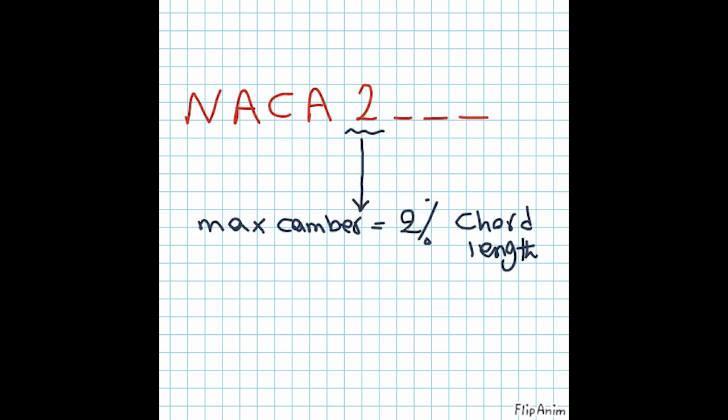First, let's talk about NACA with four digits following it. The first digit is really important—it tells us the maximum camber or the curvature of the airfoil. For example, a 2 means the airfoil has a maximum camber of 2% of the chord length. This number helps us know how curved the airfoil is, affecting its lift and efficiency.